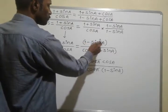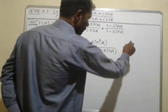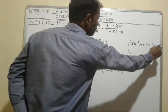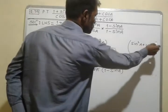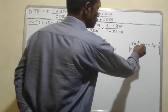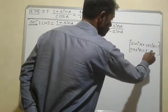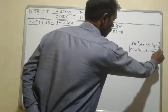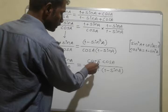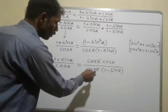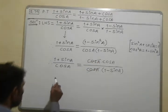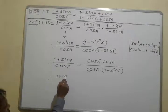Now, 1 − sin²A: using the Pythagorean identity sin²A + cos²A = 1, we get cos²A = 1 − sin²A. So I write cos²A as cosA × cosA in the numerator. The denominator is cosA × (1 − sinA). The cosA terms cancel, leaving cosA in the numerator.